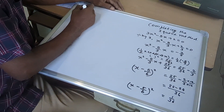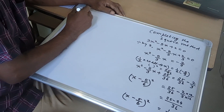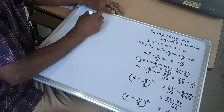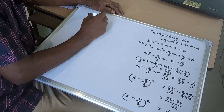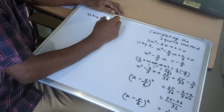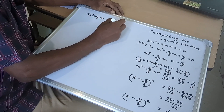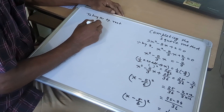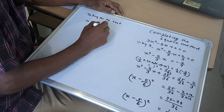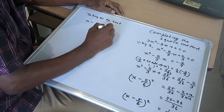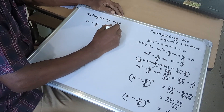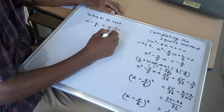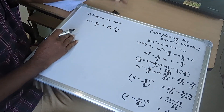Now taking the square root of both sides: x minus 5/6 equal to plus or minus the square root of 1/36, and the square root of 36 is 6, so that is plus or minus 1/6.